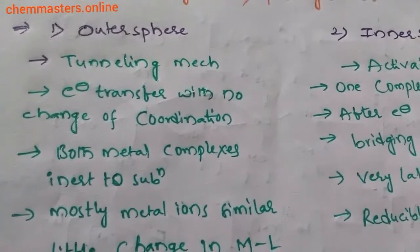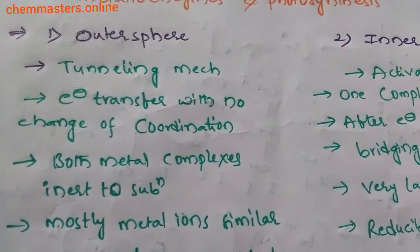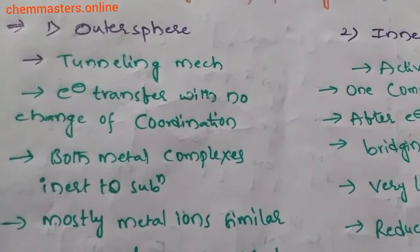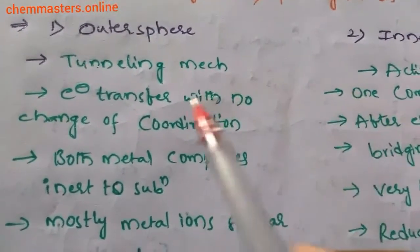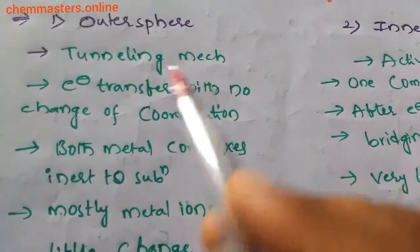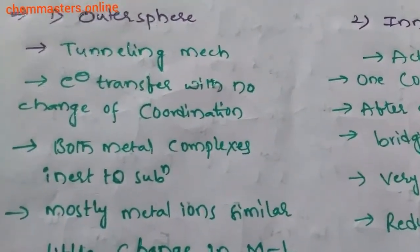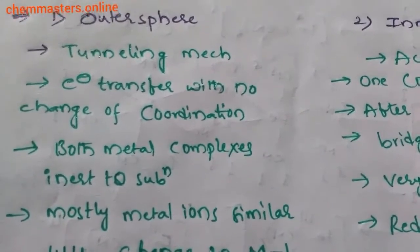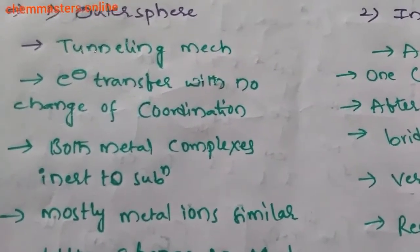Now we are discussing outer sphere electron transfer reactions. What is an outer sphere electron transfer reaction? Outer sphere electron transfer reactions occur through the tunneling mechanism. This is the first point of outer sphere mechanism.